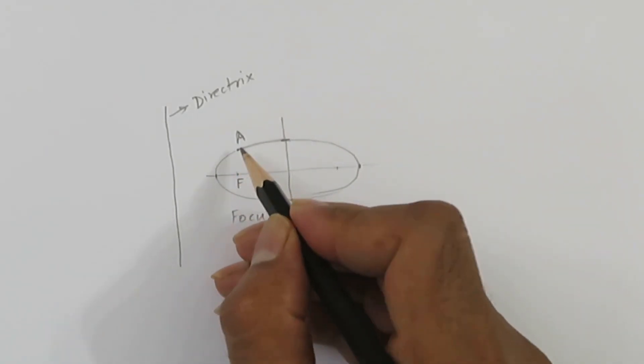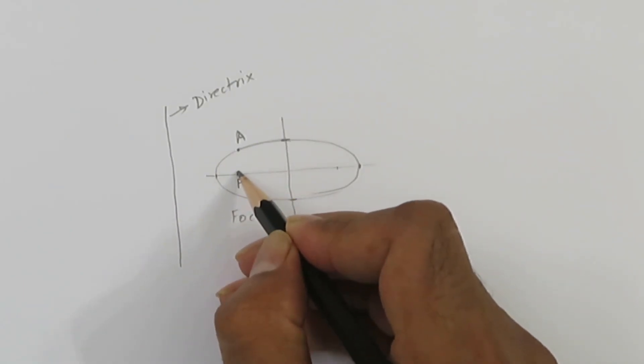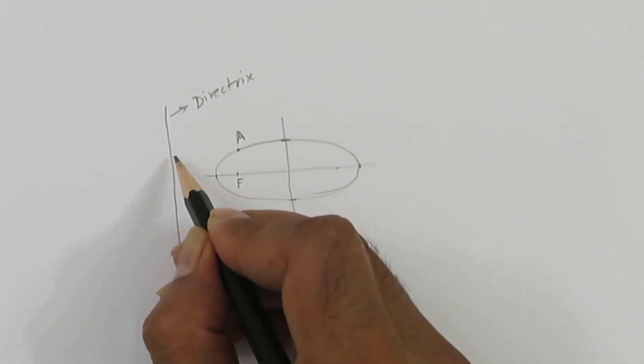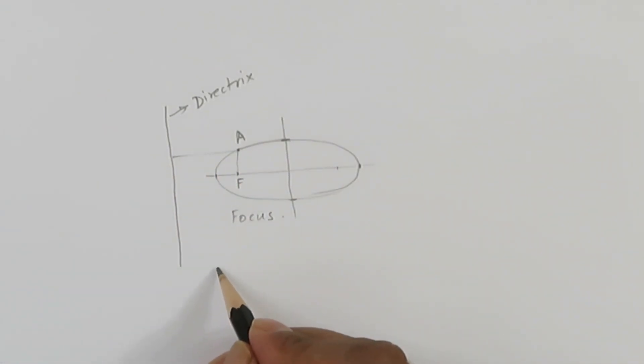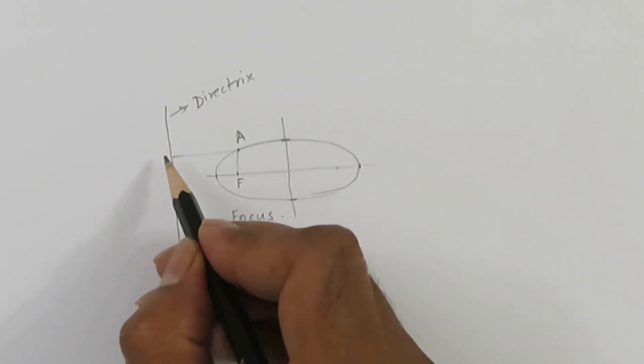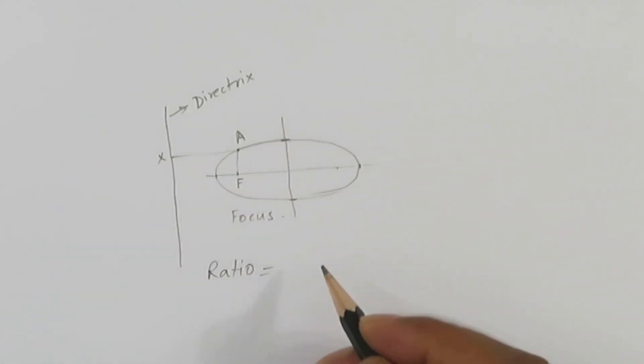The distance of this point A from F focus and distance from directrix, if we take the ratio, here we call it X, so ratio of AF over AX, this ratio must be less than 1.